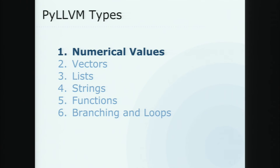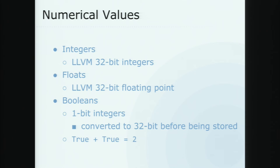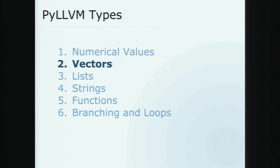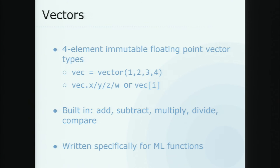For numerical values, it's pretty straightforward — integers are integers, and I added booleans. Next up is vectors: we provide support for four-element immutable floating point vector types, which was implemented before I started and was a huge part of why I chose to build on this project. These vectors, which are based on the LLVM IR vector type and passed by value, are super common in machine learning algorithms — they just come up time and time again. So having this implemented for me was a huge benefit.